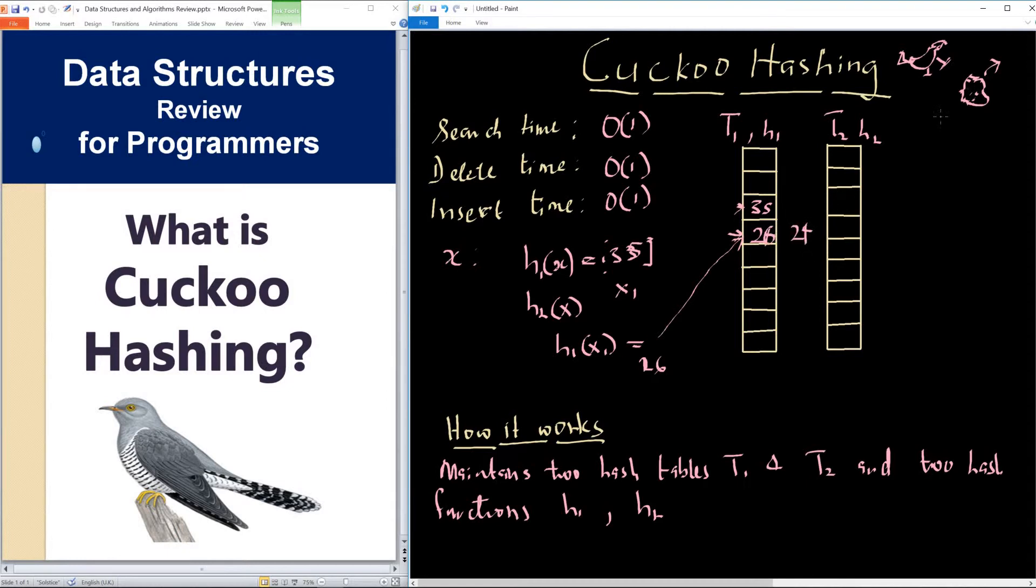Remember the bird behavior I mentioned. What happens is 24 is now going to be inserted into the location of H2 of x. The second hash position for this item will now be occupied by the item that is ejected from its home. So we put it in this position.